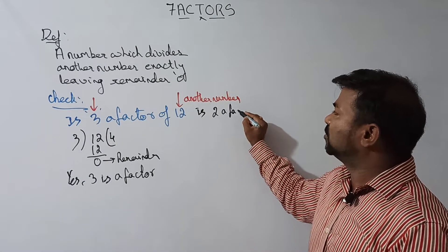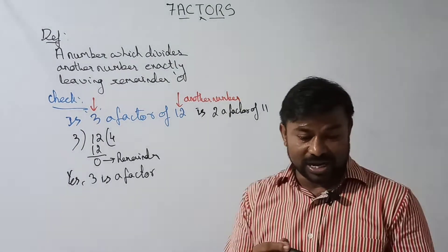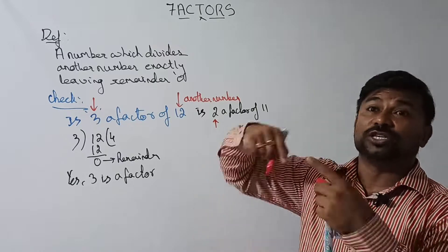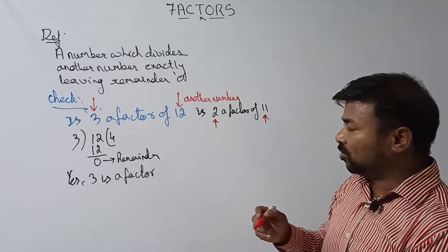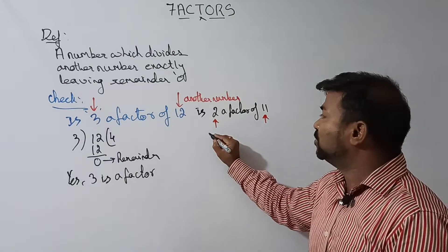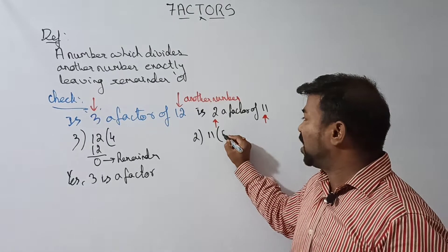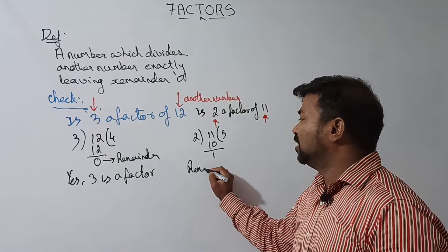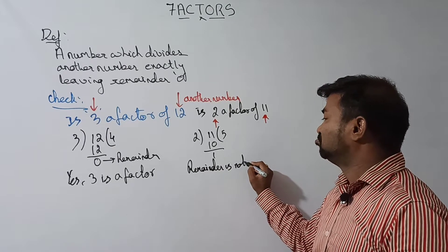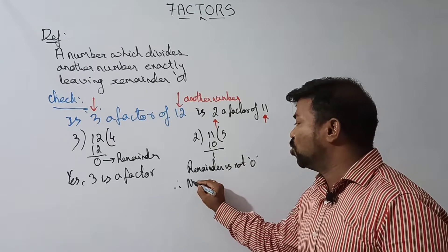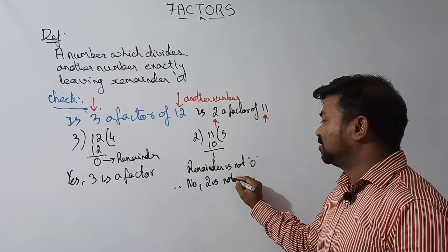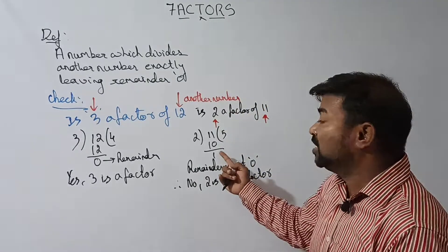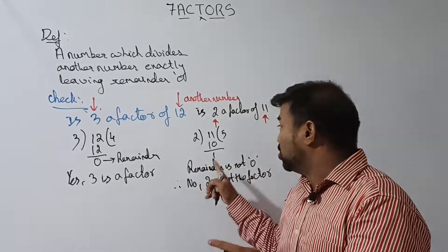Now let us check: is 2 a factor of 11? Taking 11 and dividing by 2 — two fives are ten, and the remainder is 1, not zero. Remainder is not zero. Therefore, 2 is not a factor of 11. If you get remainder zero, yes it is a factor; if not, it is not a factor.